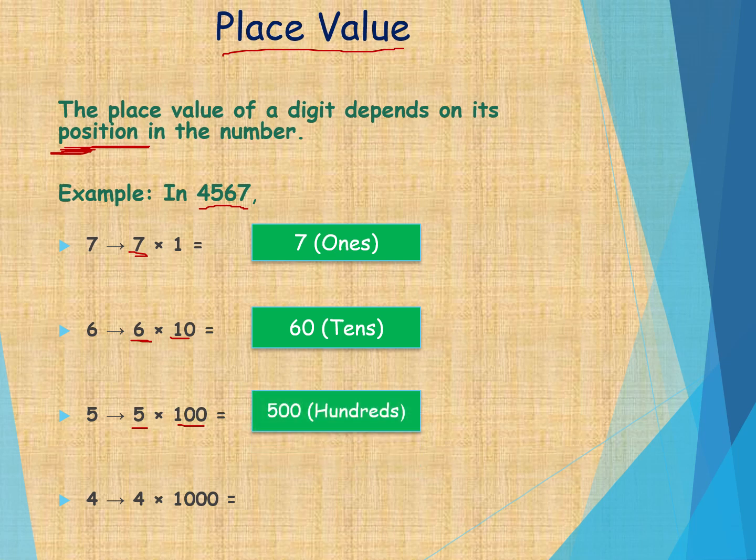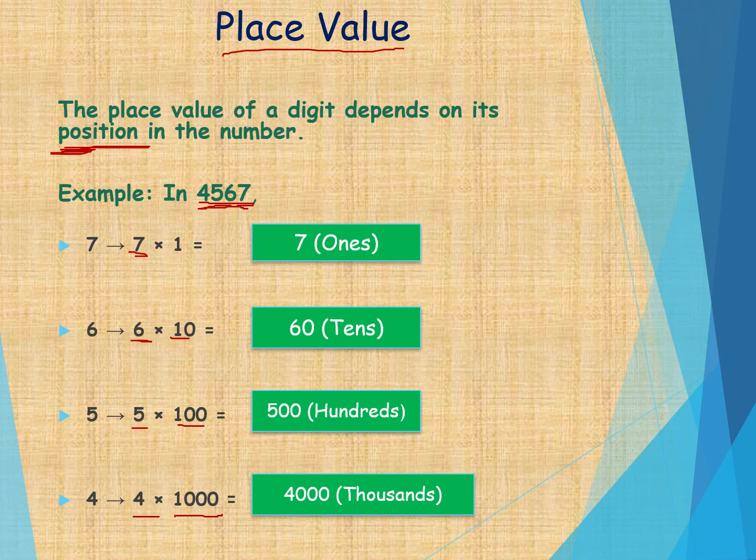Now what is 4 number position? Where it placed? 1000's. 4 into 1000. 4,000. Understood? Now it become 4,567.